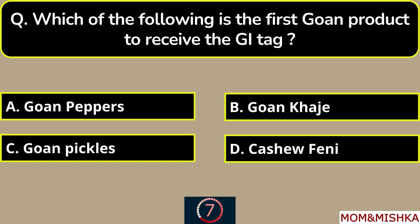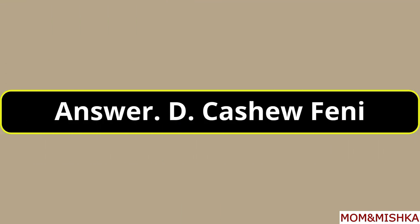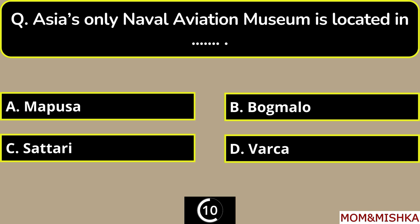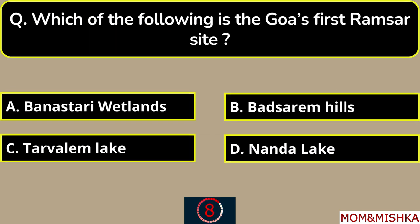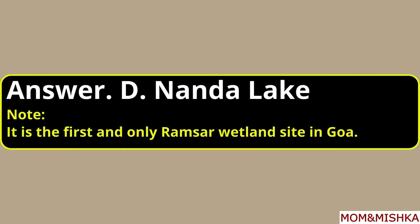Which of the following was the first Goa product to receive the GI tag? Which of the following is Goa's first Ramsar site? Nanda Lake, option D — it is the first and only Ramsar wetland site in Goa.